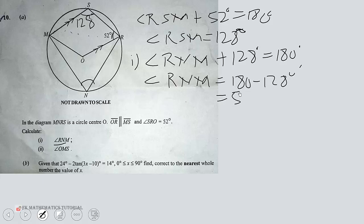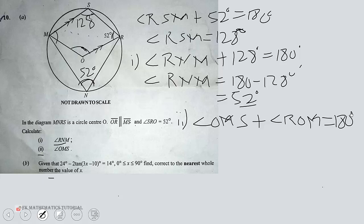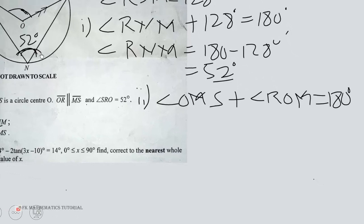Now let's look at part (ii), finding angle OMS, which is this angle here. This angle and this one are also co-interior angles. So angle OMS plus angle ROM should equal 180 degrees. Now angle ROM is two times this angle.